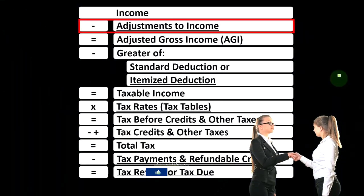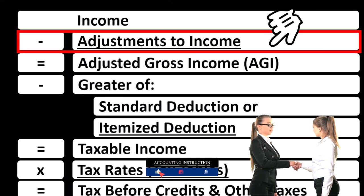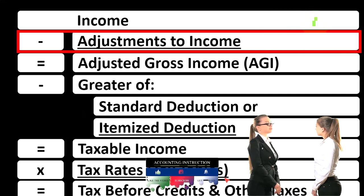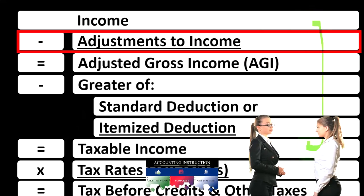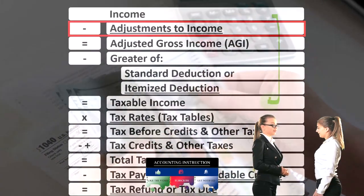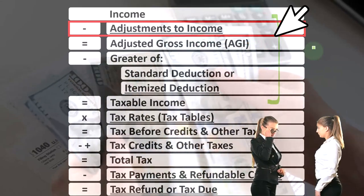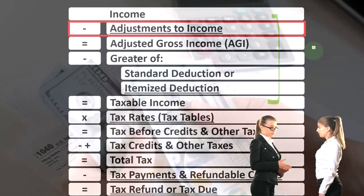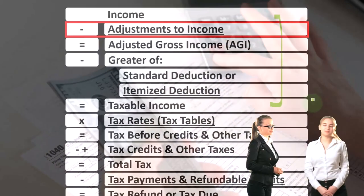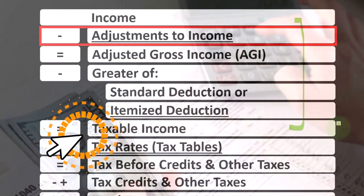In our income tax formula, we're now focused on the adjustments to income — line two of the formula. Remembering that the first half of the formula is in essence an income statement, although a strange one, where we have income up top minus the equivalent of expenses being deductions, equals the equivalent of net income — that being the taxable income. Our objective is flipped on its head.